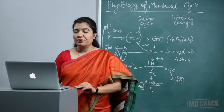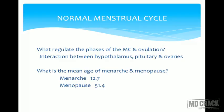What regulates the phases of the menstrual cycle and ovulation? It is the HPO axis — the hypothalamo-pituitary-ovarian axis — and the hormonal balance within this axis, which then acts on the uterus. A patent genital tract leads to visible menses. So for normal menses we require the HPO-uterine axis with a patent genital tract. These changes start at menarche — the age of puberty — and the average age of menarche is 12.7 years.